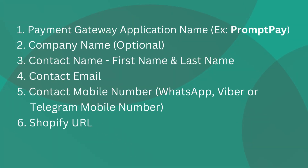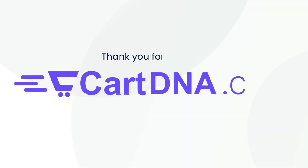1. Payment gateway application name (example: PromptPay). 2. Company name (optional). 3. Contact name — first name and last name. 4. Contact email. 5. Contact mobile number — WhatsApp, Viber, or Telegram mobile number. 6. Shopify URL. 7. Billing address. Thank you for watching.